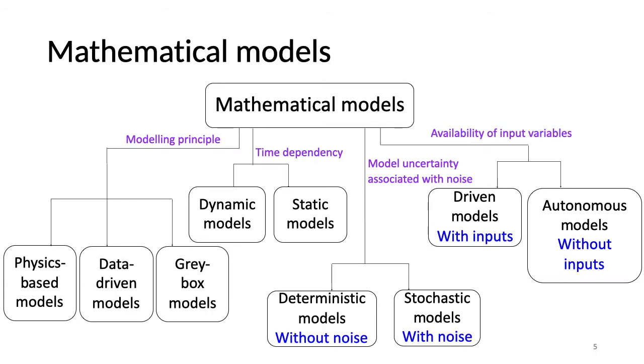We can specify mathematical models in different ways. Based on the model in principle, which creates the relation between inputs and outputs, we can divide models into either physical, data-driven, or gray box models. Physical models are developed based on physical laws, data-driven models are based on observations, and gray box models are a combination of those.